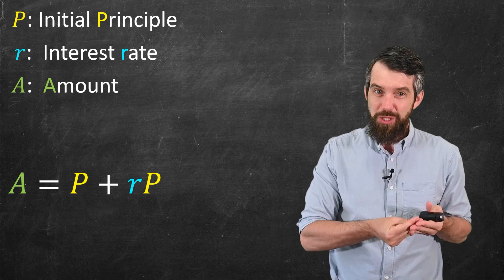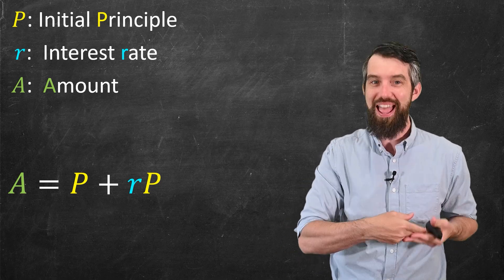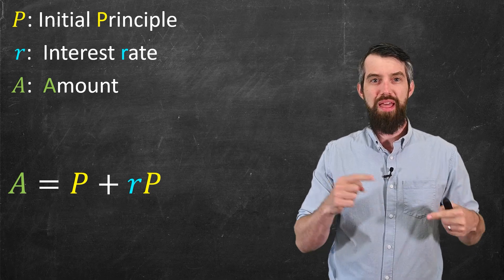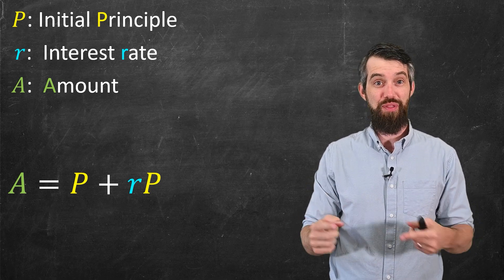Well, the first P stands for if I loan out $100, I'd better get that $100 back. I'd better get back my initial principal. And then the rP stands for the interest I get.